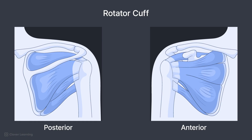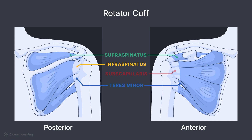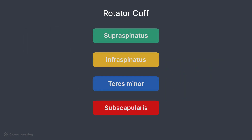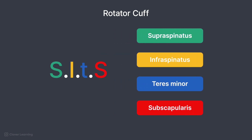Structures of the rotator cuff include the supraspinatus muscle and tendon, infraspinatus muscle and tendon, teres minor muscle and tendon, and subscapularis muscle and tendon. One trick to remember the structures of the rotator cuff is the acronym SITS: S for supraspinatus, I for infraspinatus, T for teres minor — remember it's teres minor and not teres major because the T is lowercase — and the final S stands for subscapularis.